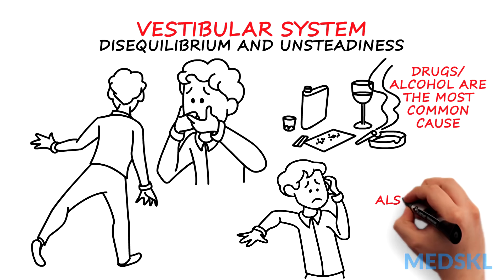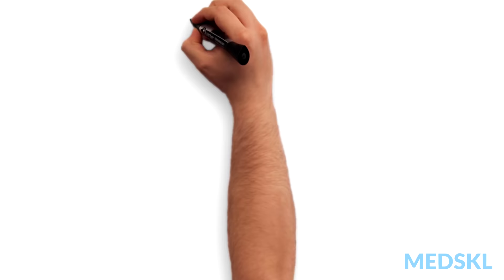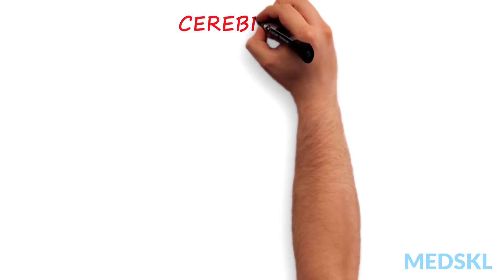Drugs and alcohol are the most common causes of this type of ataxia. If it is unilateral, Meniere's disease is important to consider.